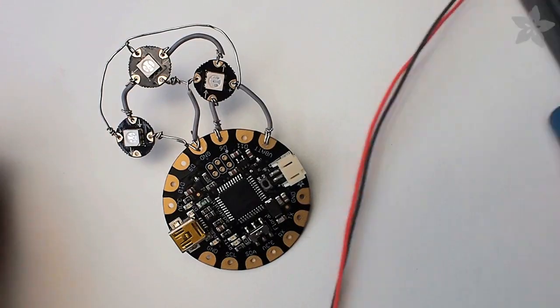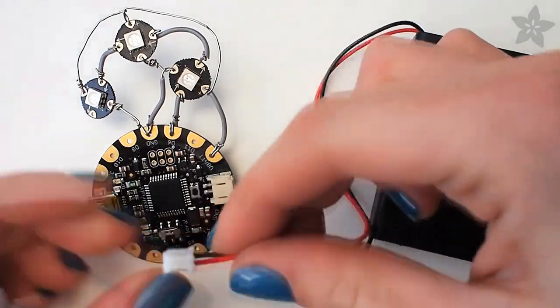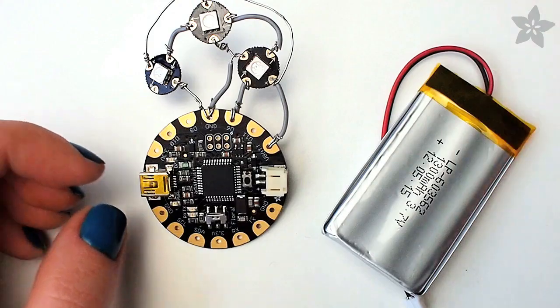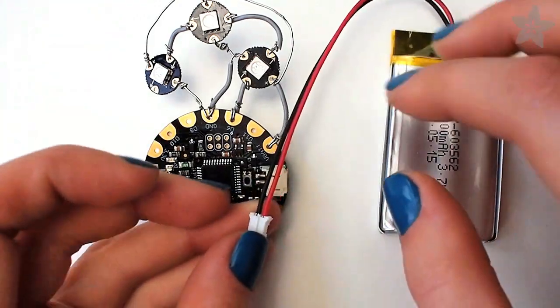To power the Flora we recommend this 3 AAA battery holder. It's the easiest and safest thing to do but it does leave you with a bit of a big battery pack so I prefer these rechargeable lithium polymer batteries.